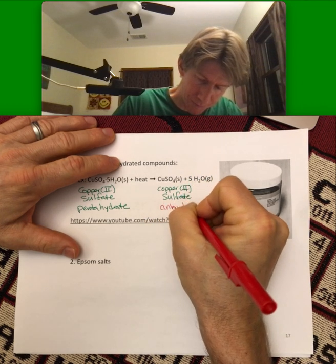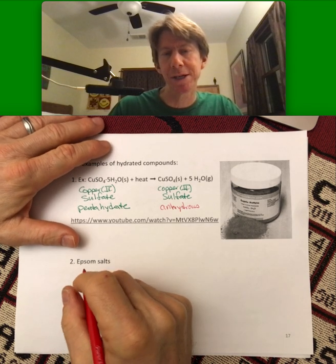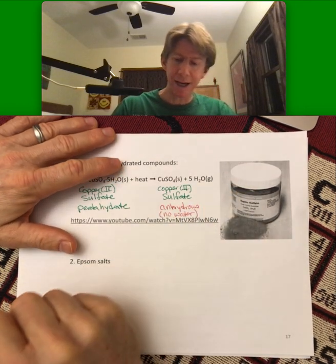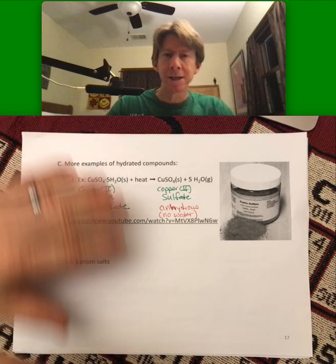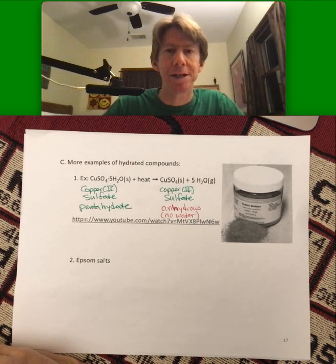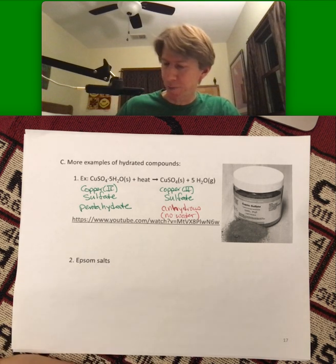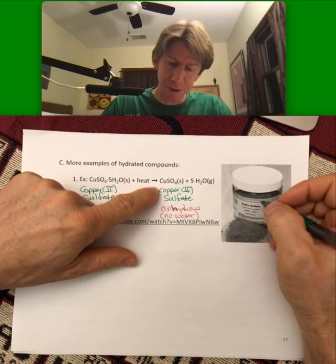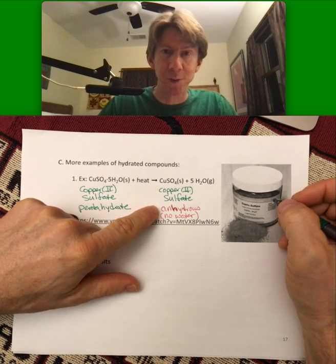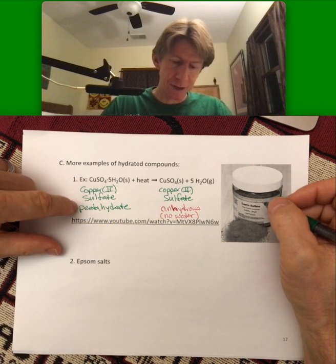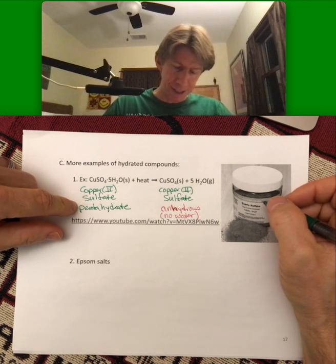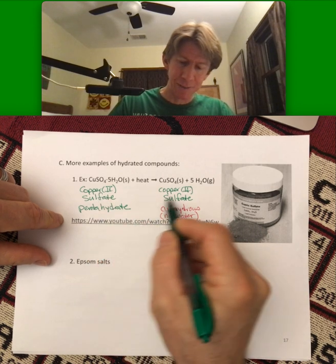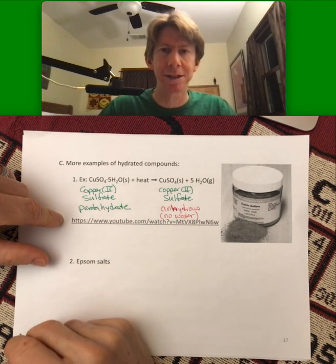Anhydrous is a word that means no water. Anhydrous actually has more useful uses than just hydrates, but we'll run into it pretty much just here. So the name of this is copper-2-sulfate — it is sometimes called the anhydrous form, whereas the other would be called a hydrated form. Here's a video of turning copper-2-sulfate pentahydrate into copper-2-sulfate, the anhydrous version.